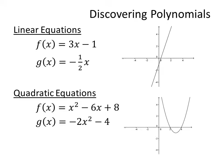Lines are what we call a degree 1 polynomial because the exponent on the function is 1. Quadratic equations are what we call degree 2 polynomials because the highest exponent in those functions is 2.